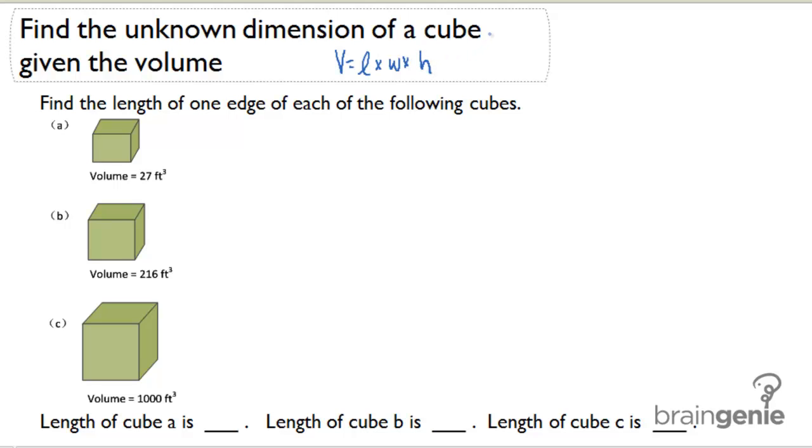The important thing to remember for a cube is that all the dimensions are the same. The length equals the width and equals the height. Because these three are equal, I'm going to call all three of them S, which stands for the side length of the cube. So I'm going to rewrite this formula to be V equals S cubed.